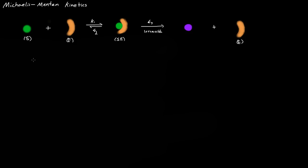Let's think about what we're measuring. We have our substrate and want to measure how fast it goes to product — we call that V, the speed of the reaction. What we notice with Michaelis-Menten kinetics is that when you plot V versus the concentration of the substrate, there's a straight line at first, but then it curves and flattens out. We call that maximum value Vmax.